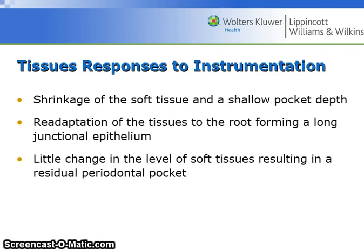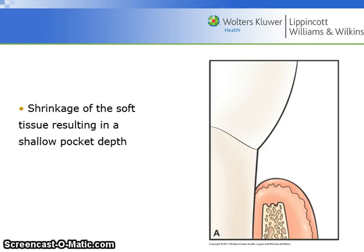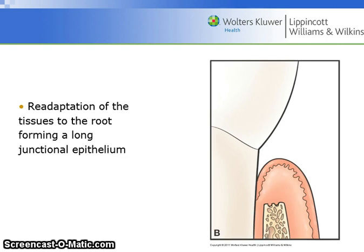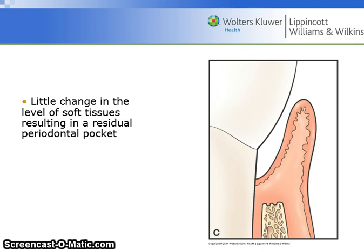Tissue responses to instrumentation can include shrinkage of the soft tissue and a shallower pocket depth, re-adaptation of the tissues to the root forming a longer junctional epithelium, or little change in the level of soft tissues resulting in a residual periodontal pocket. One image demonstrates shrinkage of the soft tissue resulting in a shallow pocket depth. Another image shows little change in the level of soft tissue, resulting in a residual periodontal pocket.